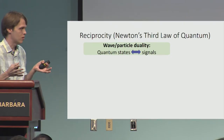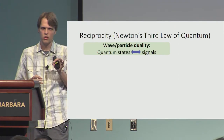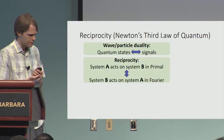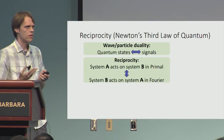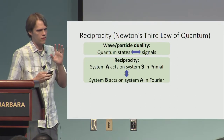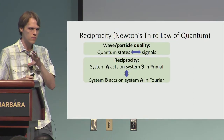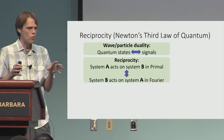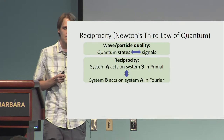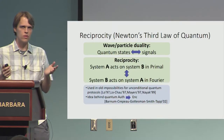Why did the quantum random oracle model do anything useful? A consequence of wave-particle duality is that we can basically interpret quantum states as signals, and once we have a signal we can do Fourier analysis. There's a nice principle I'll call reciprocity: if you have two quantum systems and system A is acting on system B in the primal domain, then when you look in the Fourier domain what you actually see is that system B is acting on system A.